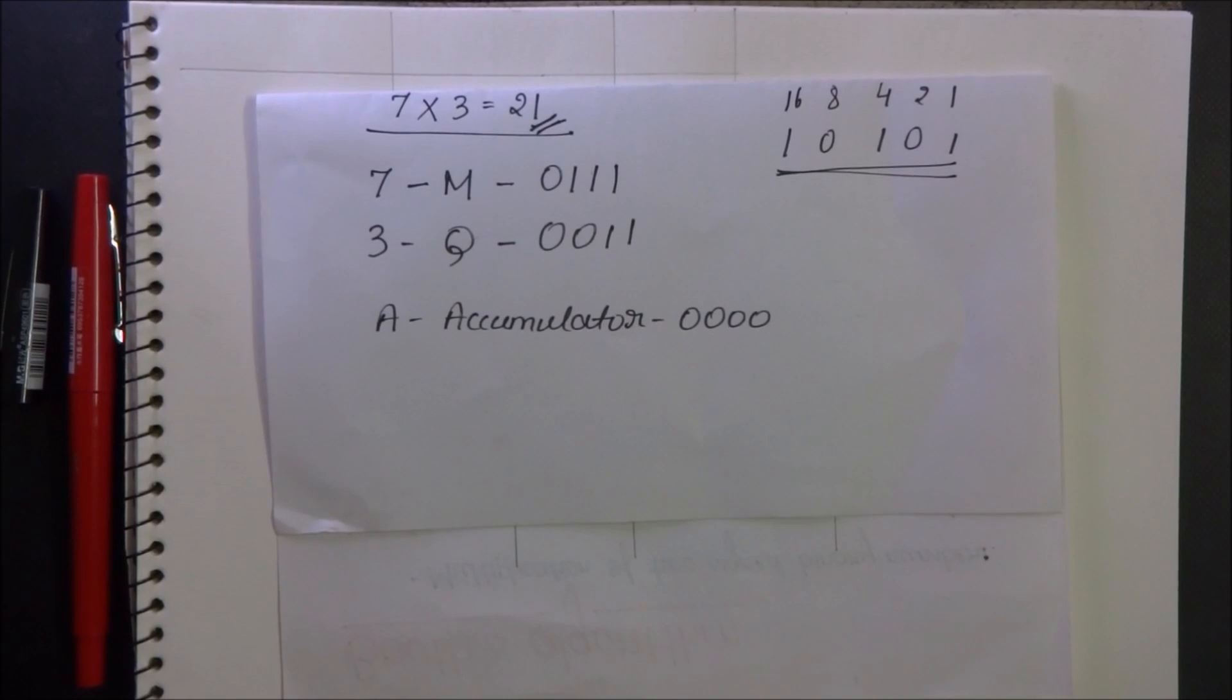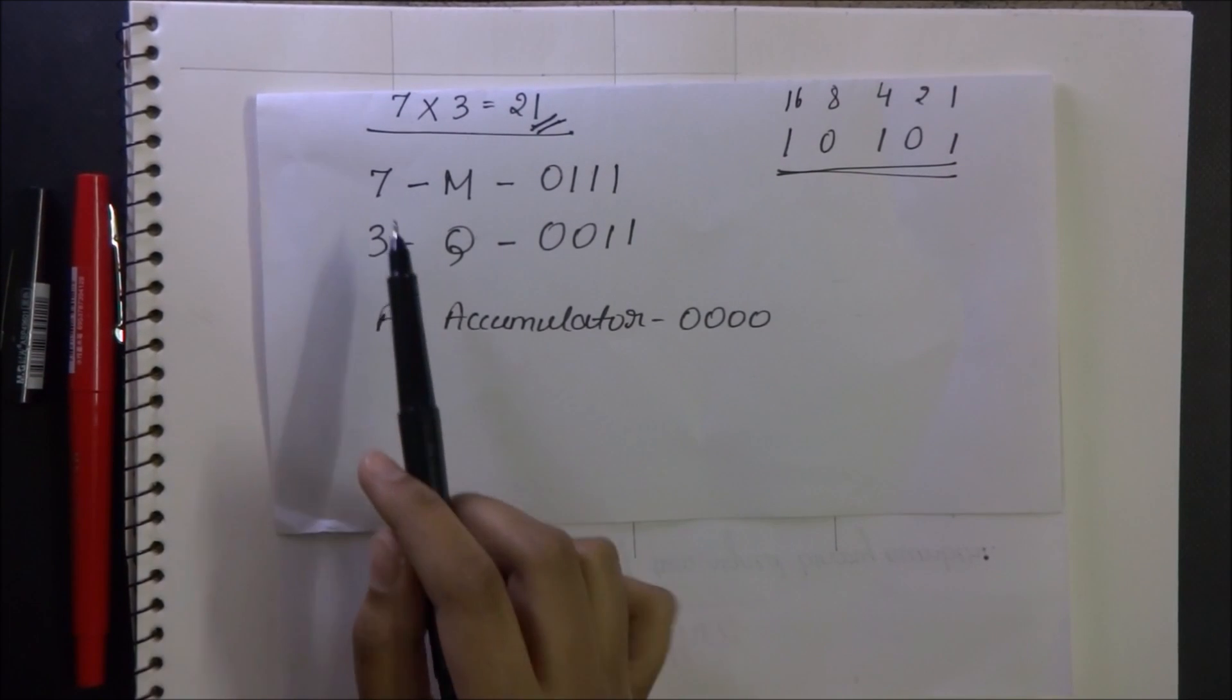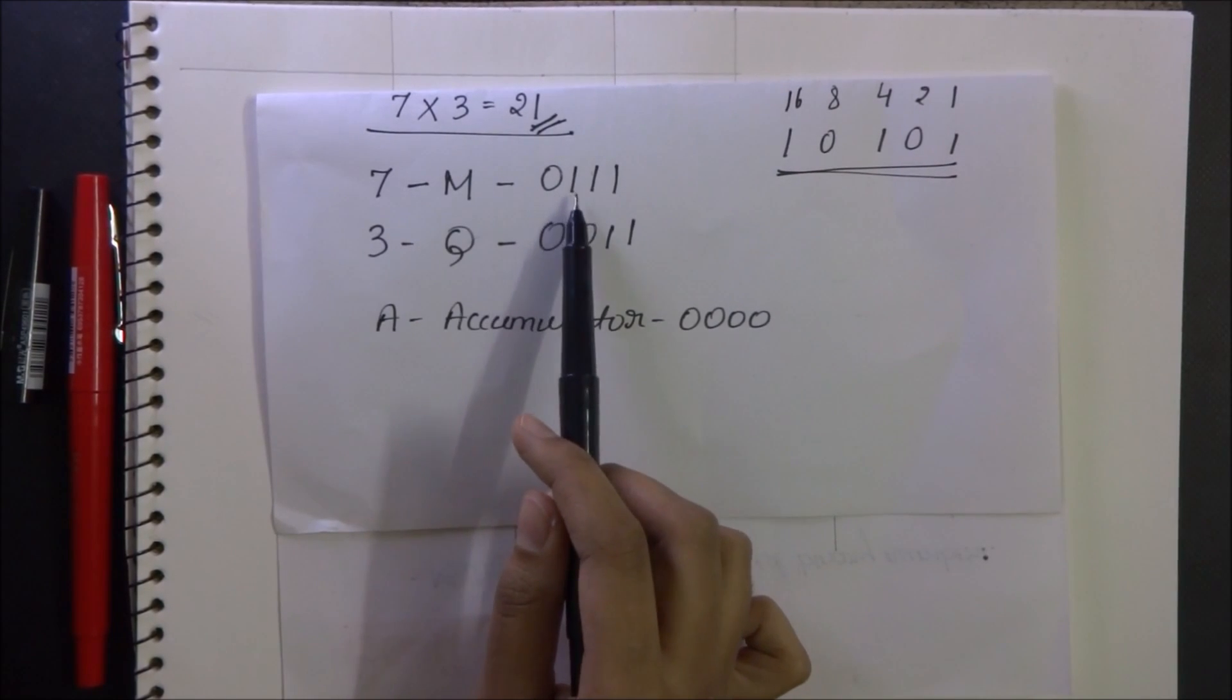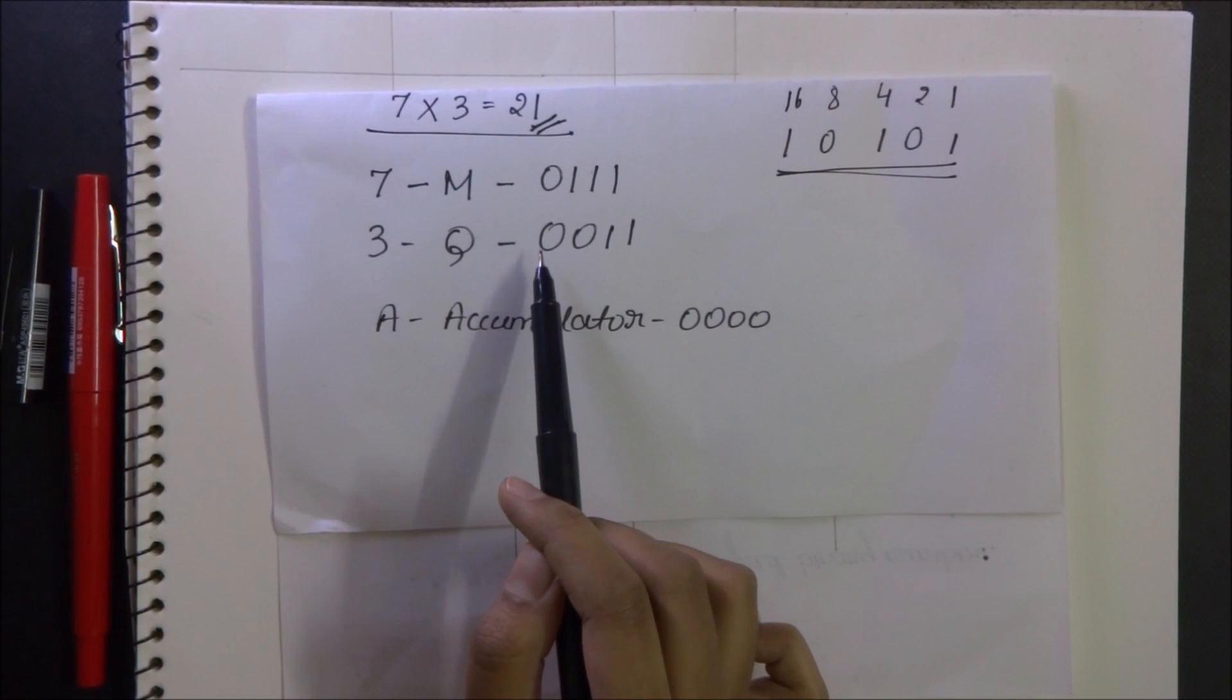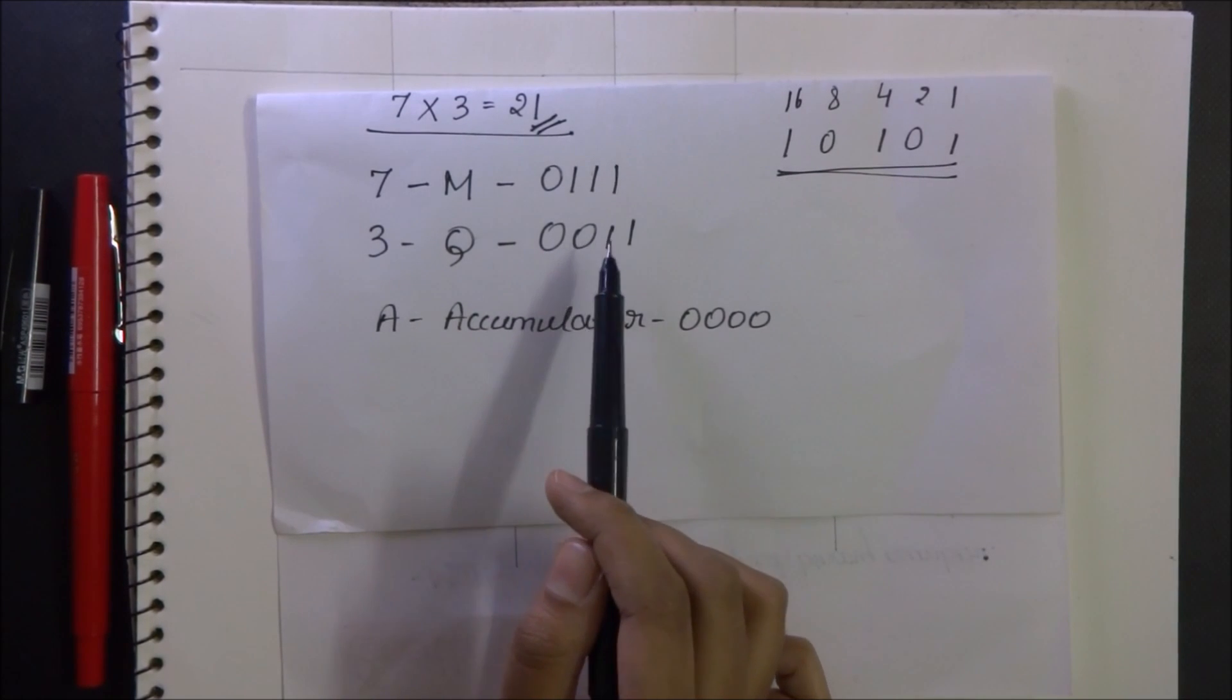For the sake of an example, let me consider multiplication of 7 and 3. Let 7 be M, whose binary equivalent is 0-1-1-1. 3 is Q, whose equivalent binary form is 0-0-1-1.